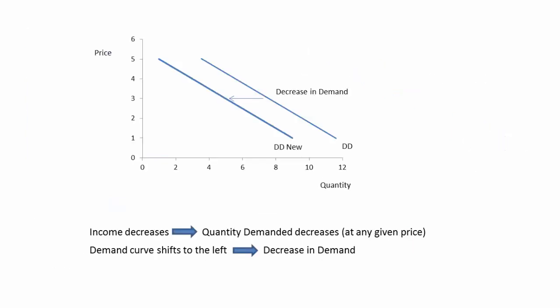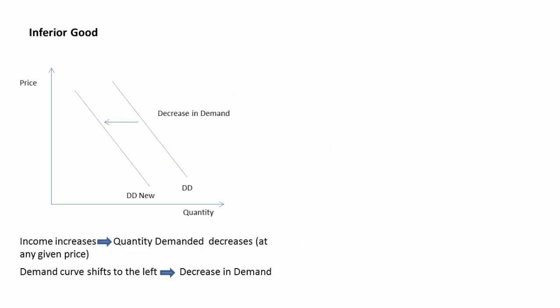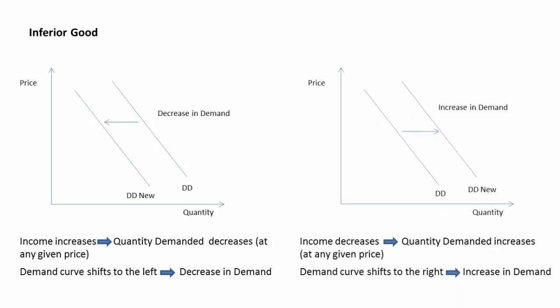Similarly, if the income of a consumer decreases, the demand curve for good X will shift to the left, and it is called a decrease in demand. In the case of an inferior good, the demand for the good decreases with the rise in income, leading to a leftward shift in the demand curve. And when income decreases, the demand for an inferior good increases, leading to a rightward shift in the demand curve.